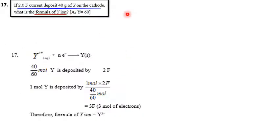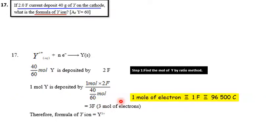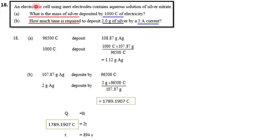Question 17: 2 faraday deposits 40 g of element Y (relative atomic mass = 60). Find the formula of the Y ion. Using the general equation Yⁿ⁺ + ne⁻ → Y: moles of Y = 40/60 mol. For 2 faraday, that is 40/60 mol Y, so for 1 mol Y we need (2 ÷ 40/60) = 3 faraday, meaning 3 moles of electrons. Therefore n = 3, and the formula of the Y ion is Y³⁺.